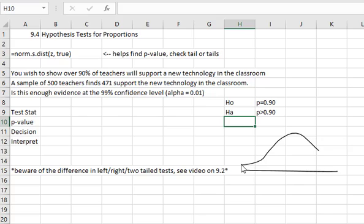Because we want to show more than 90% of teachers support the new technology, which means if we were to draw our little normal distribution with the 0.90 inside, what we're looking for is actually a right tail. So we're going to have to do one minus the command when we actually do our p-value, because the normal command only gives the left tail, and in this case we're interested in the right tail.